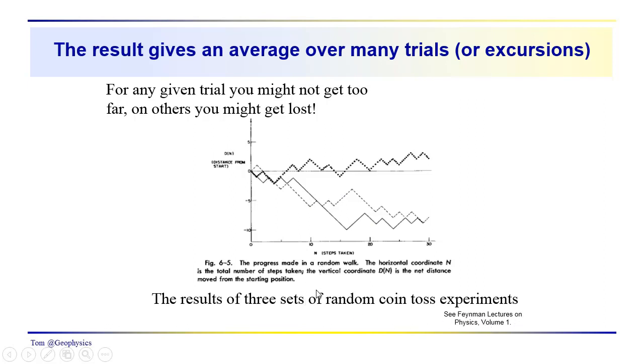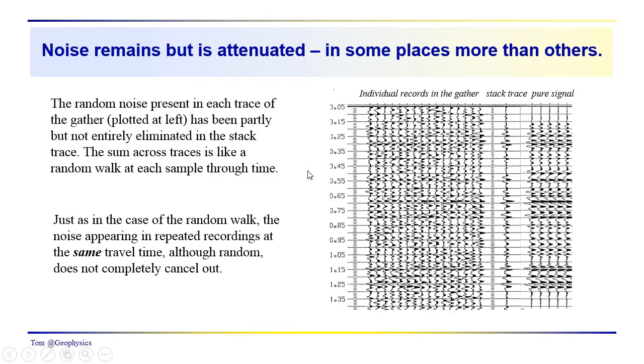What we've been talking about is the average displacement this random walker will cover. What distance, on average, will the random walker cover if they take their walk several times? We show that's equal to the square root of N, the number of steps. In the case of the random walk, the noise varies at any particular time.